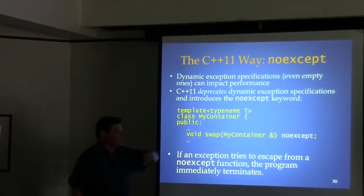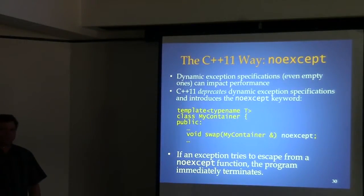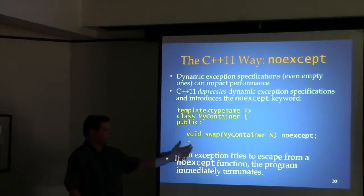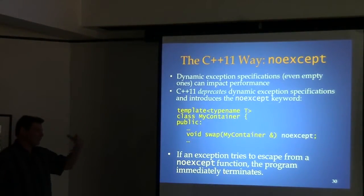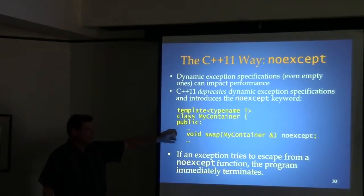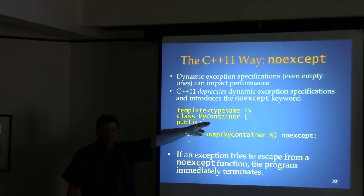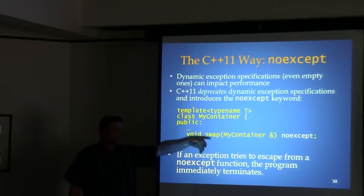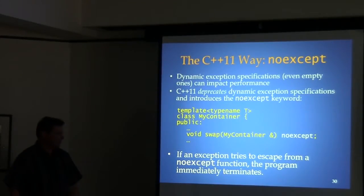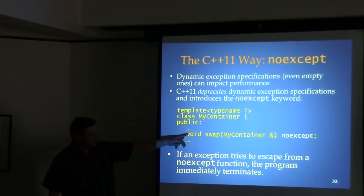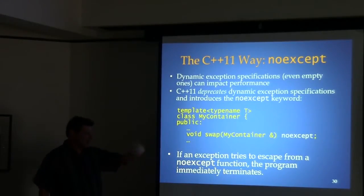The simple noexcept says 'I'm never going to throw an exception.' For something like swap, you might be able to safely say that if you know the types and can be confident every T you specialize MyContainer on has a non-throwing swap. If code inside such a function does actually try to throw an exception, it'll terminate the program.